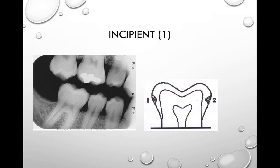Class one, or incipient, includes caries that extend less than halfway through the enamel. This is significant because at that point, the lesion can be arrested or reversed with proper treatment. Proper treatment can include things like better oral hygiene such as flossing daily, or fluoride treatment using a higher fluoride toothpaste.